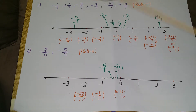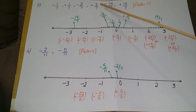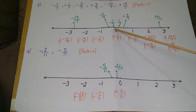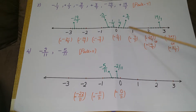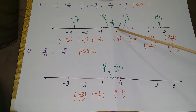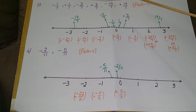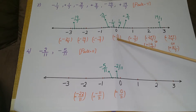In this third example, the denominator is 7, so we have to divide each segment into 7 parts. First, draw the number line and divide each segment into 7 parts. I have divided this 0 to 1 segment into 7 parts.